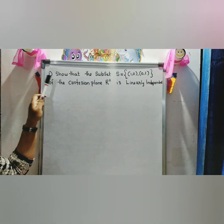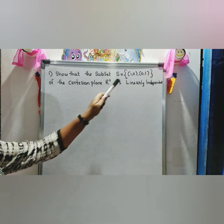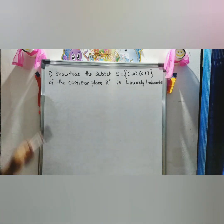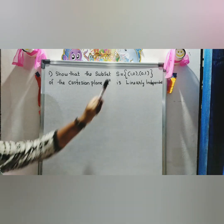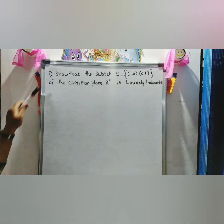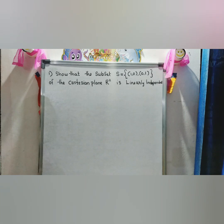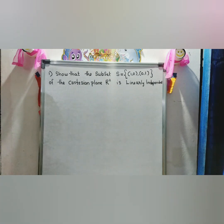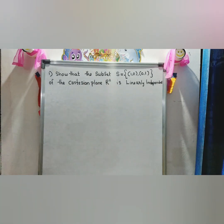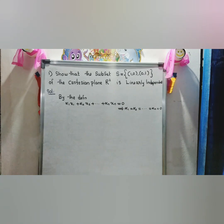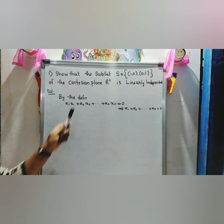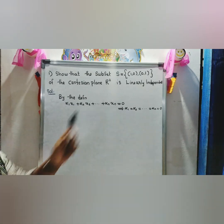Problem: Show that the subset S = {(1,0), (0,1)} of the Cartesian plane ℝ² is linearly independent. By definition, the set S is linearly independent if α₁x₁ + α₂x₂ + ... + αₙxₙ = 0 implies α₁ = α₂ = ... = αₙ = 0.